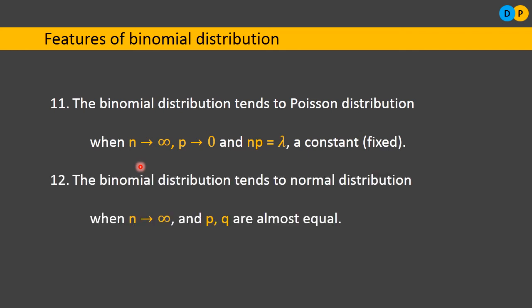Feature 10: binomial distribution tends to normal distribution. When n tends toward infinity but the probability of success p and probability of failure q are almost equal to each other, then the binomial distribution tends toward the normal distribution. These features summarize the key properties of binomial distribution.